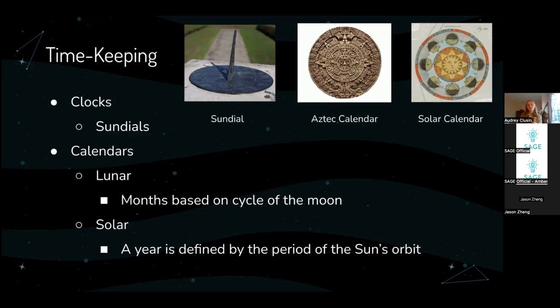Because of this, the lunar month doesn't exactly line up with the year, and after a while things get very off track. That's why people tended to develop solar calendars more often. Solar calendars are defined by the period of the sun's orbit — in our case, divided into 12 months — and based on where the sun is in the sky throughout the year. This was really helpful for people who wanted to keep track of when to plant things, when to do religious and cultural events. Overall, having a solar calendar was a lot better than a lunar calendar because it was more precise.